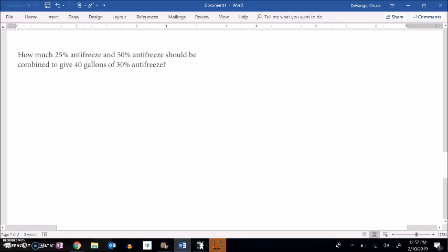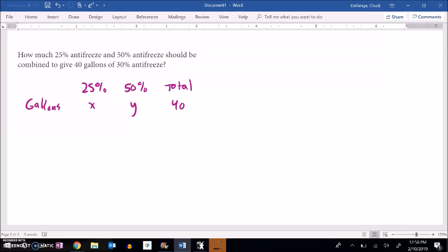One last example. How much 25% antifreeze and 50% antifreeze should be combined to give 40 gallons of 30% antifreeze? So we have 25% and 50%. We're going to mix it. We don't know how many gallons of each we have. That's what we're trying to figure out. So we'll call that x, call that y. We want that total to be 40. So there's one of our equations. And then the mix, the percent mix, this would be 0.25 times x, this would be 0.50 times y. And then we want it to end up being 30%, and the total is 40.